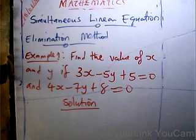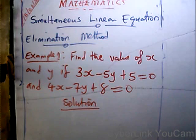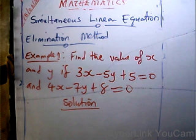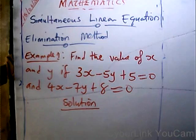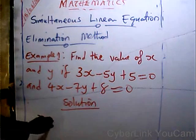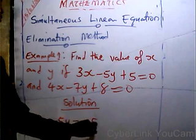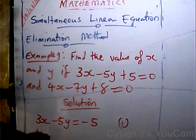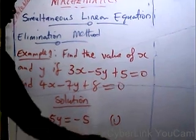So, if you have a problem like this — I know you have done this in your SS2, I am just reminding you of what you have done so far. We are asked to find the value of x and y, if 3x minus 5y plus 5 is equal to 0, and 4x minus 7y plus 8 is equal to 0. We can rearrange to get 3x minus 5y equals minus 5 as equation 1, and 4x minus 7y equals minus 8 as equation 2.